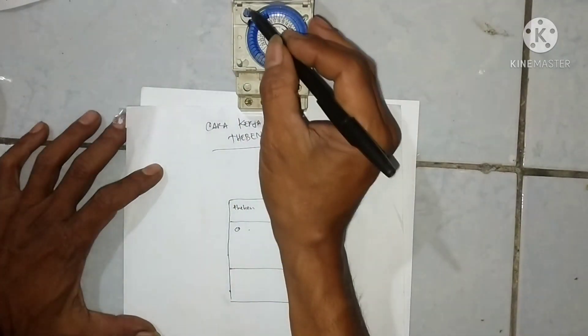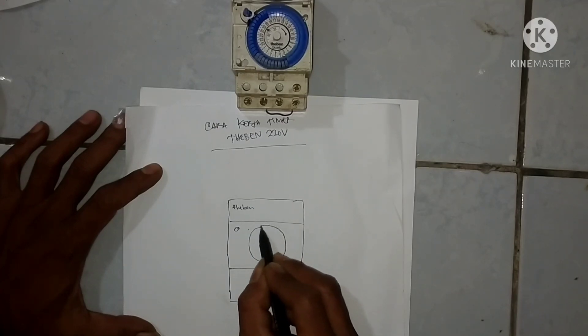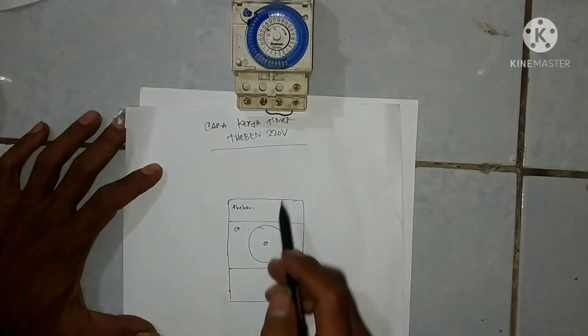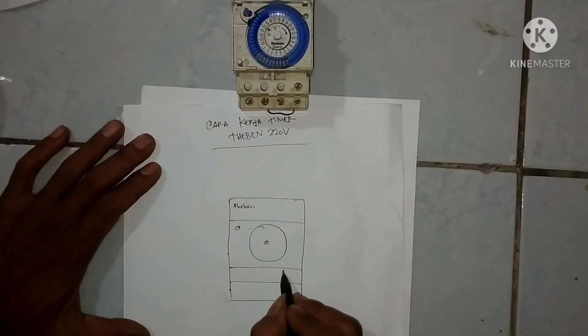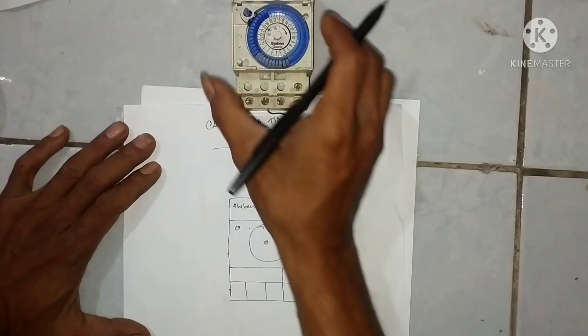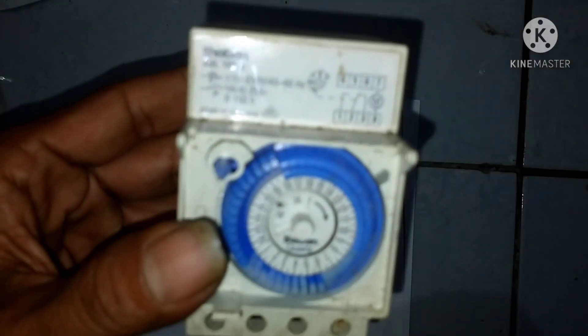Nah itu adalah selektor buat manual auto ya. Ini selektor buat setting jam waktunya. Sekarang saya gambarkan buat koneksi-koneksinya sesuai dengan diagram yang ada di timer tersebut. Ini saya gambarkan seperti ini.